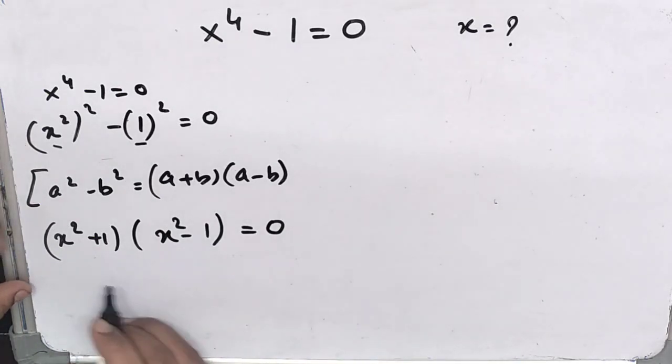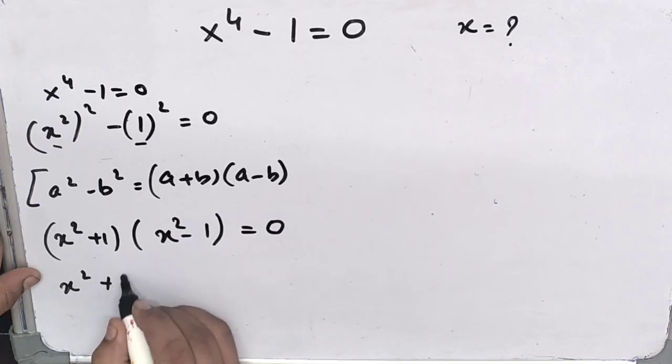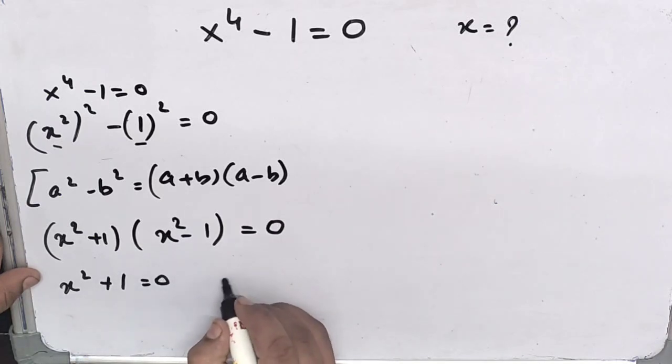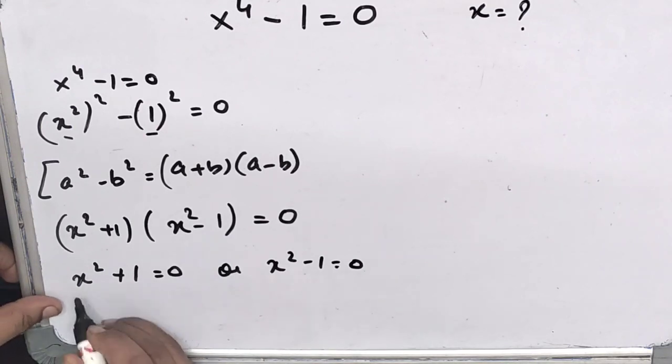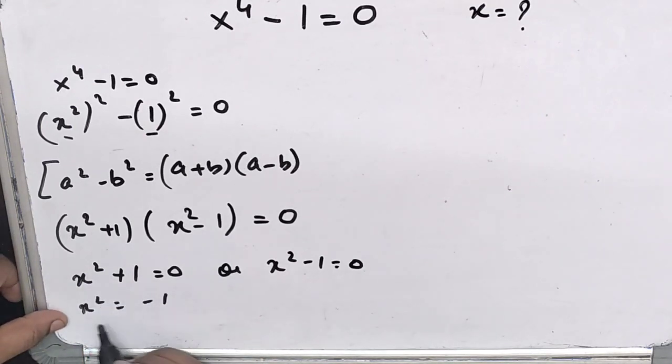Now we got two equations: x square plus 1 equals to 0, or x square minus 1 equals to 0. This x square equals to minus 1. Taking square root both sides, this got cancelled.